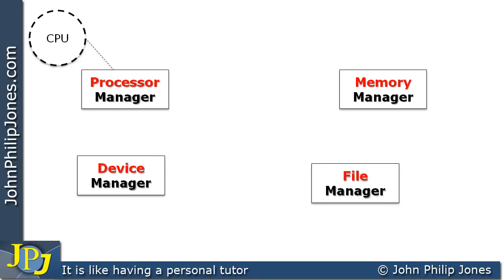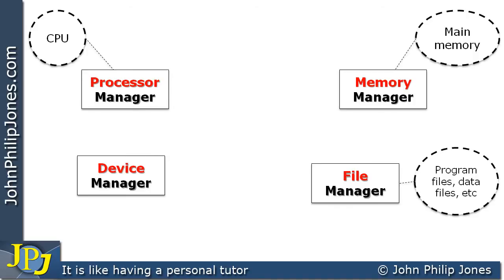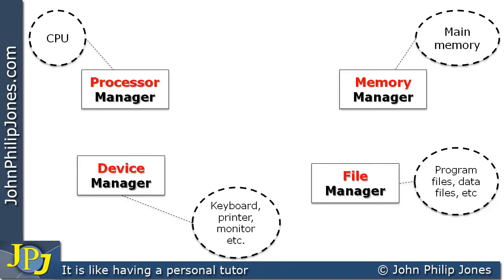When we talk about a process manager, we really need to reflect on the central processing unit. When we talk about the memory manager, we're really dealing with the main memory — the silicon memory, the random access memory. The file manager is responsible for the programs, the files, the data that exist on a disk. And the device manager handles the keyboard, the printer, the monitor.